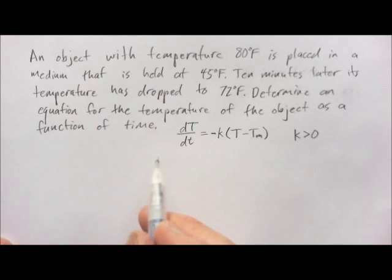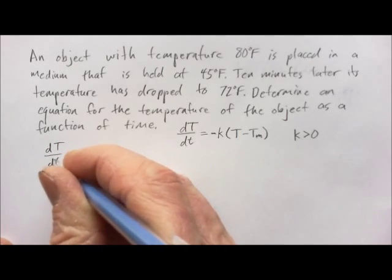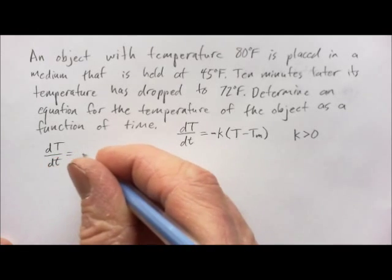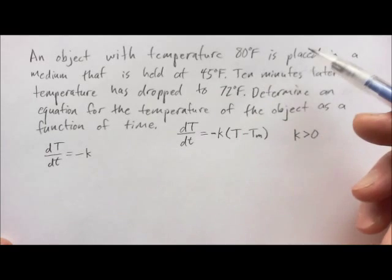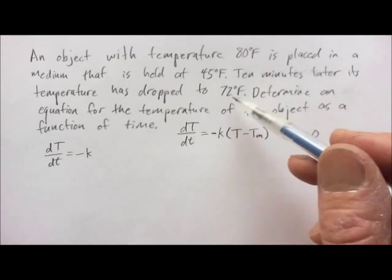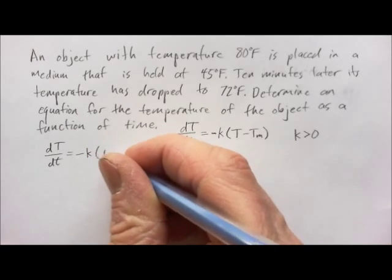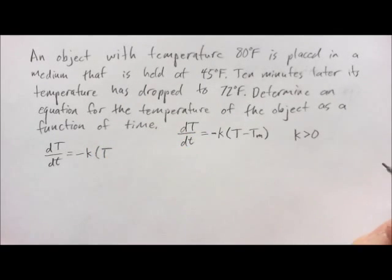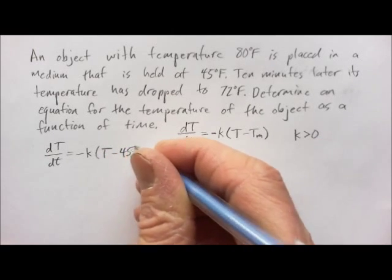So, what we know is that we have dT/dt equals... We don't know this K. That will be dependent on the material that this thing's made of. We'll be able to use that 72 degrees Fahrenheit to find that. The temperature of our object, capital T, is a variable, but the temperature of the medium is held at 45 degrees.